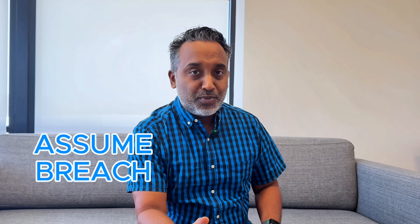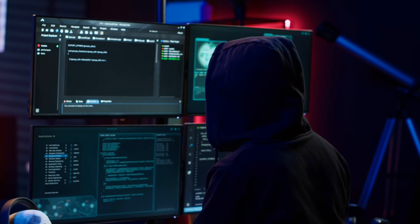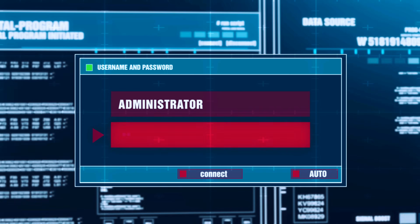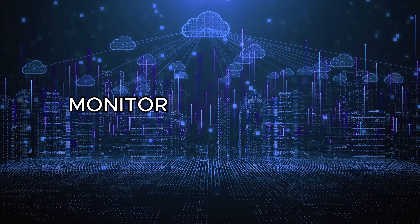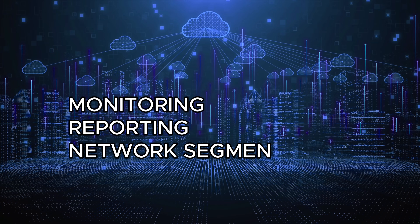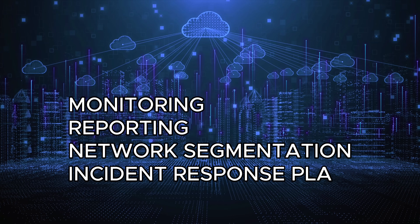Lastly, assume breach. This puts the zero in zero trust. You want to assume that you've already been hacked and operate from a model where the hacker has very limited access to your data and to your network. Assume that you've already been breached and build your defenses accordingly. This means monitoring and reporting, network segmentation, and a vigorous incident response plan.